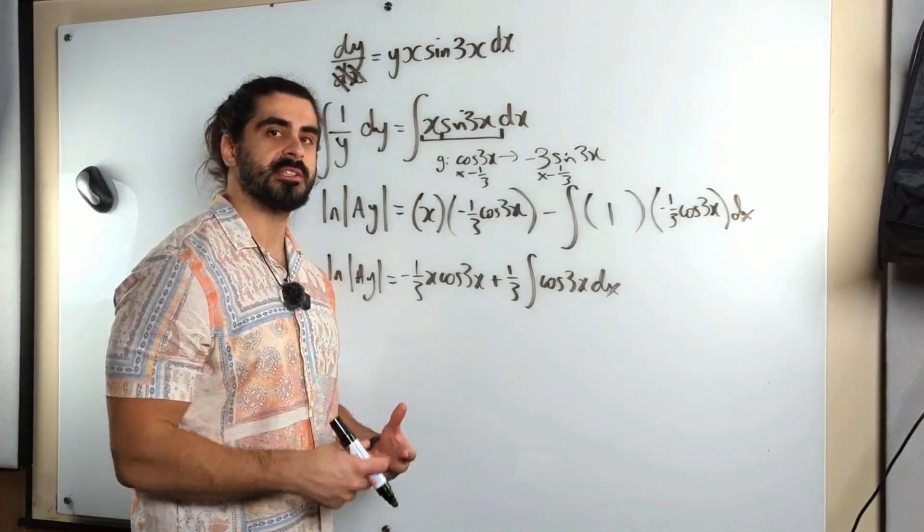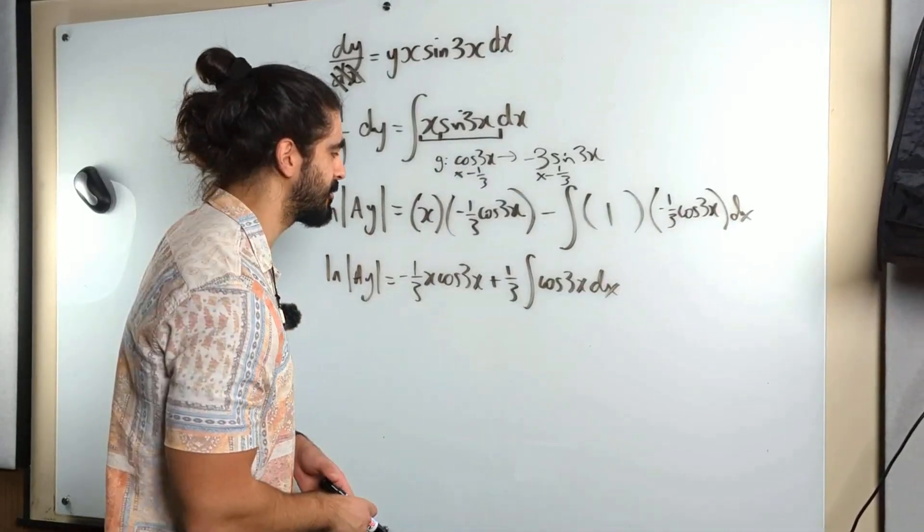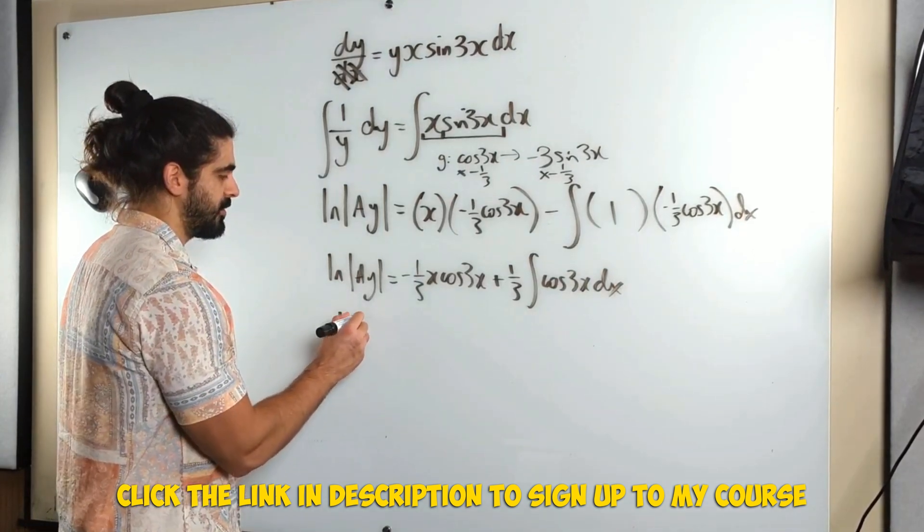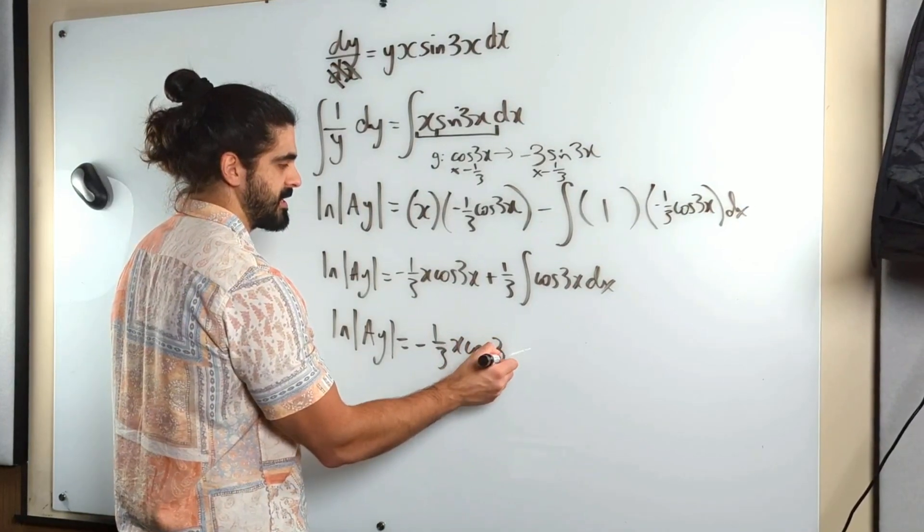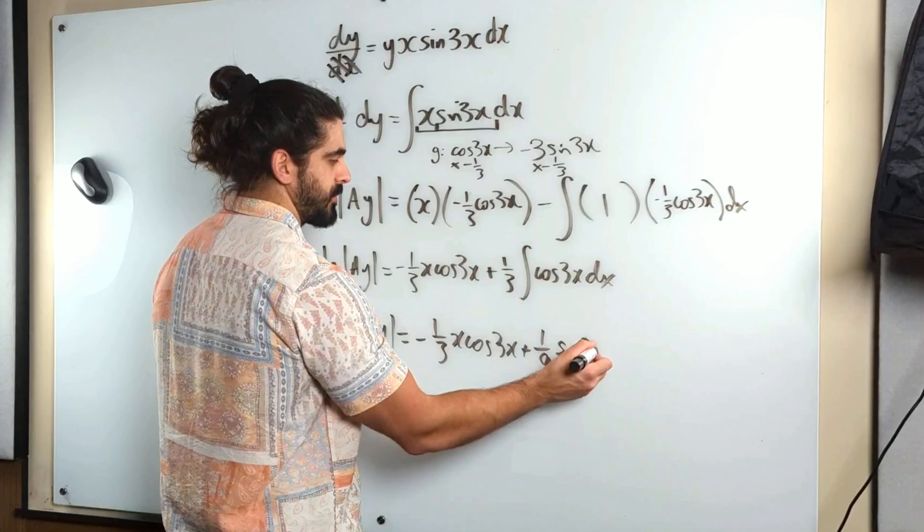My guess is sin 3x. Sin 3x differentiates to 3 cos 3x. We do a third of both sides, so it's a third sin 3x. Then a third times a third to make a ninth. So you have ln ay is minus a third x cos 3x plus one ninth sin 3x.